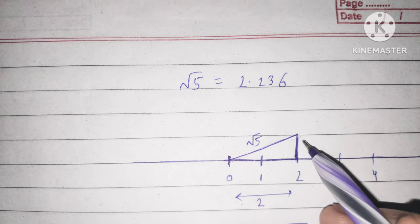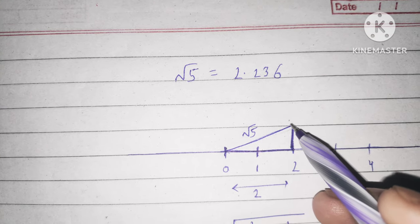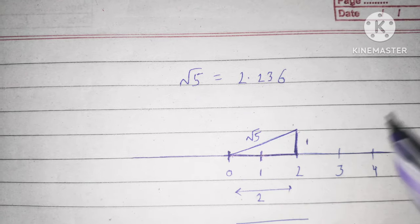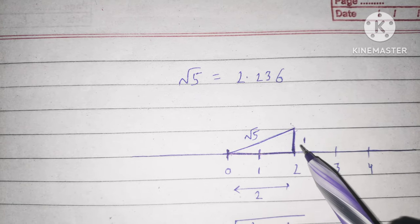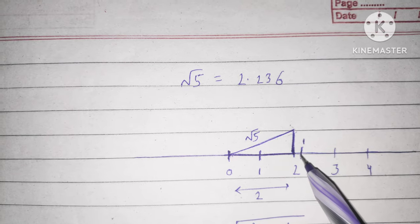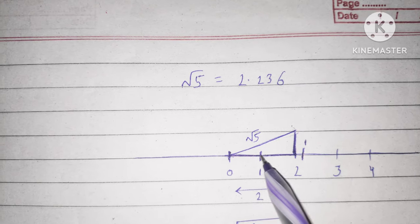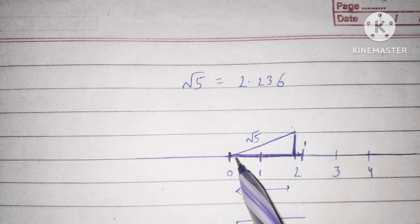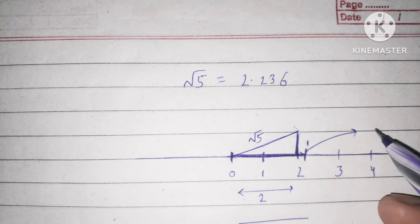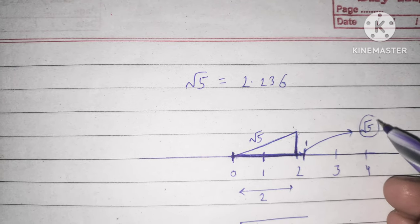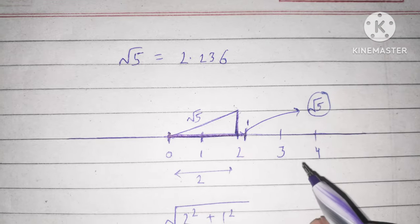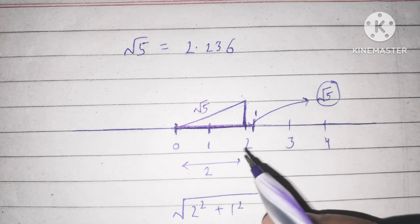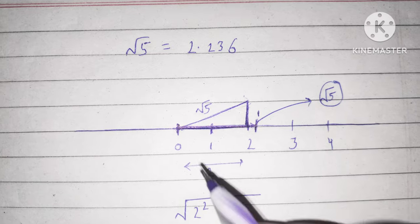Now we show root 5 on the number line. Using a divider, we measure the length of the hypotenuse — the distance from here to here — which is root 5, that is 2.236. With the help of a scale and divider, we mark this length on the number line.